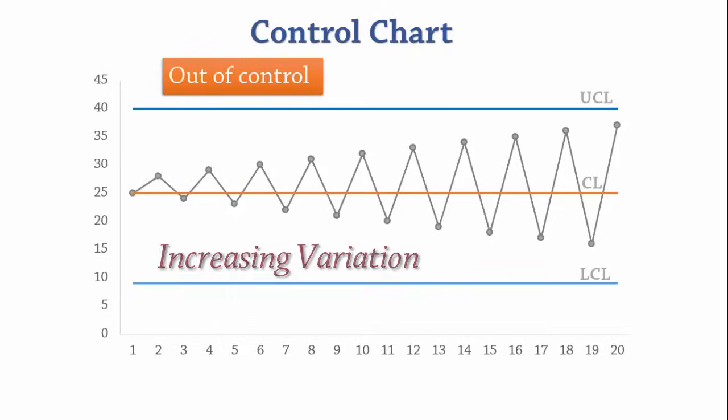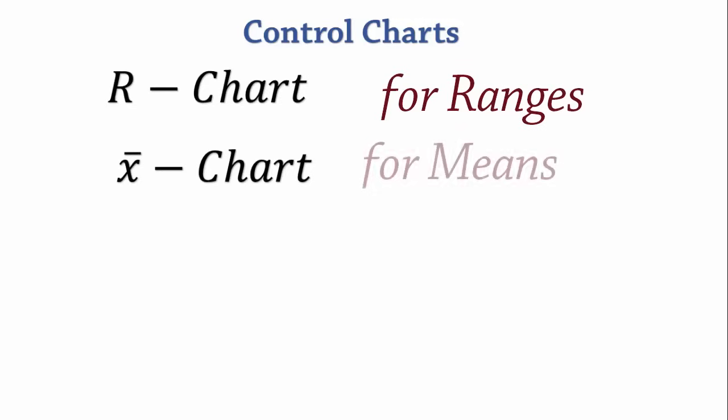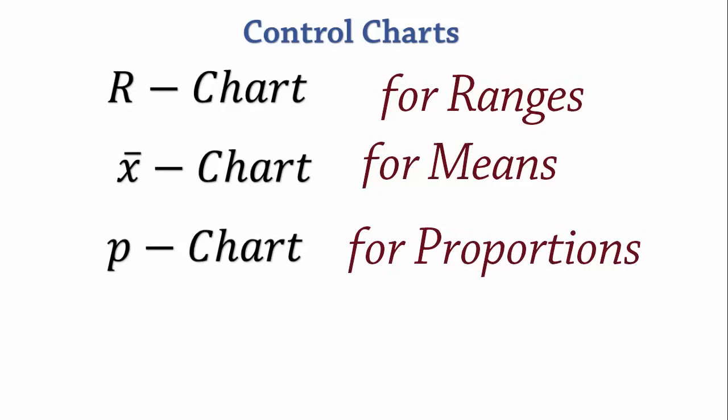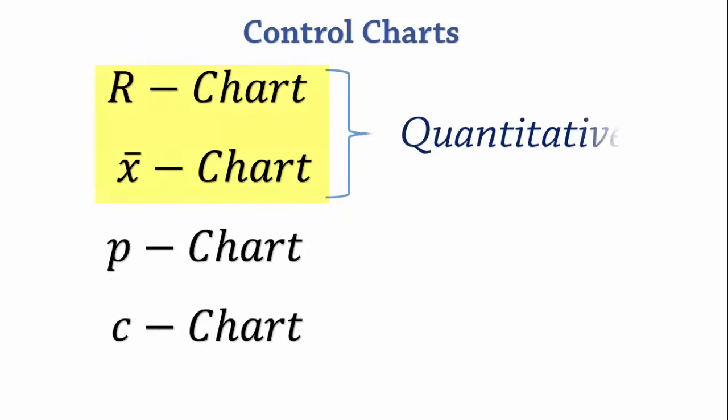In this SPC series, we will be discussing the R chart, the X bar chart, the P chart, and the C chart. The R and X bar charts are used to monitor quantitative variables, i.e., variability and central tendency, while the P and C charts are used to monitor qualitative variables, i.e., attributes or characteristics.